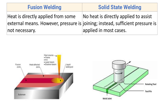The next point: in fusion welding, heat is directly applied from some external means; however, pressure is not necessary. Heat may be applied with a suitable flame, with the help of an arc, or with the help of a laser or electron beam. Pressure is not necessarily required — sometimes pressure is applied, sometimes it is not.